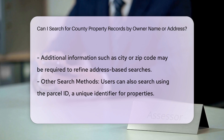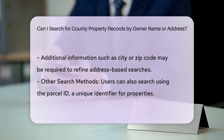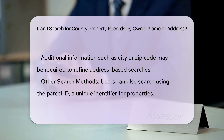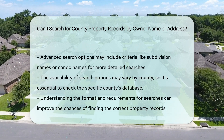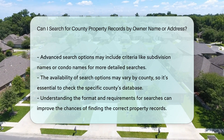Searching by address: many county property databases allow you to search by street address. Simply enter the street address to find the corresponding property records. Some databases might also require or allow additional information like city or zip code to refine the search results.